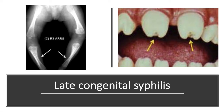Late congenital syphilis presents similarly to the tertiary gummatous syphilis in adult infection with chronic persisting inflammation. This chronic infection often affects the eyes, ears, bones, joints, and central nervous system. Characteristic signs include Hutchinson incisors, as on the picture on the left, mulberry molars, typical facial appearance, saber-shin tibia, and swollen knees.